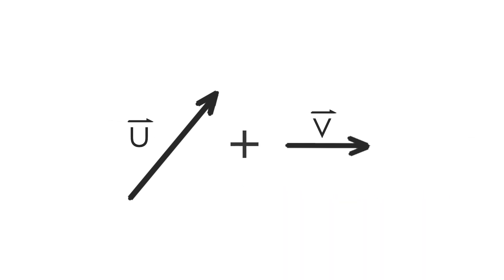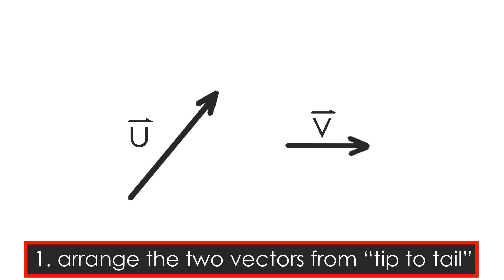To add two vectors, you can follow two simple steps. First, you must arrange them in what is called tip-to-tail position.